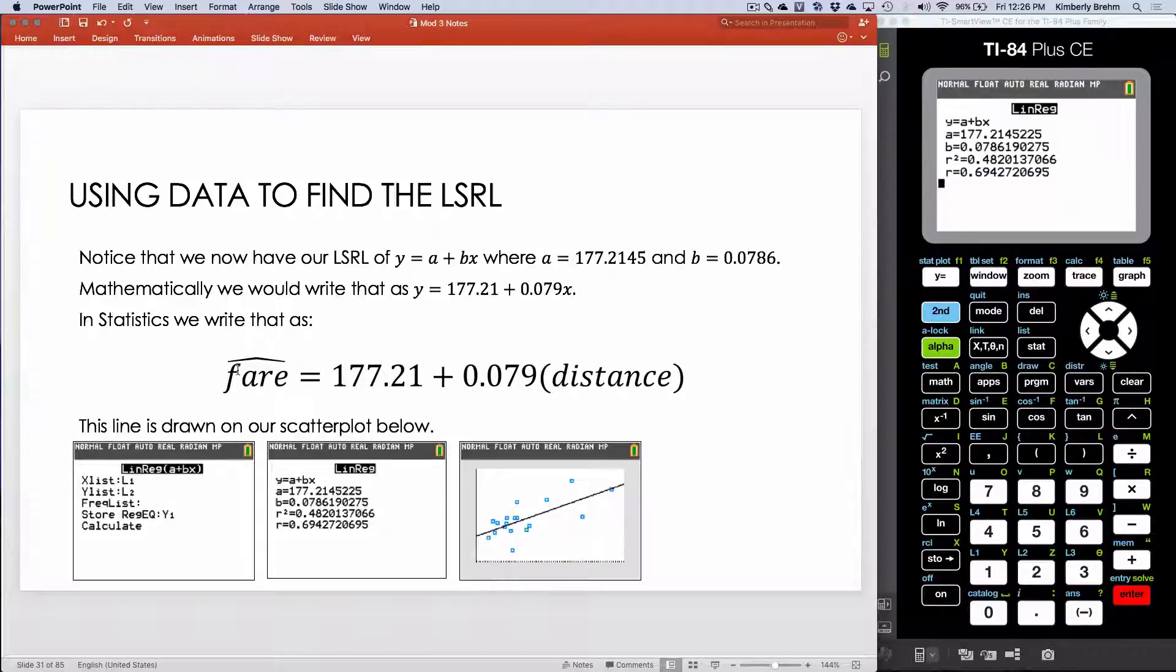However, we are doing statistics. We're in a statistics course, and therefore we're going to write this how we would statistically. So notice I'm replacing Y with fair, but fair has a hat on it, and the hat's important. Because what this tells me is that I'm predicting the fair. The hat tells me it's a prediction. I'm predicting the fair based on distance. So I've replaced X with distance, and I've replaced Y with fair hat.